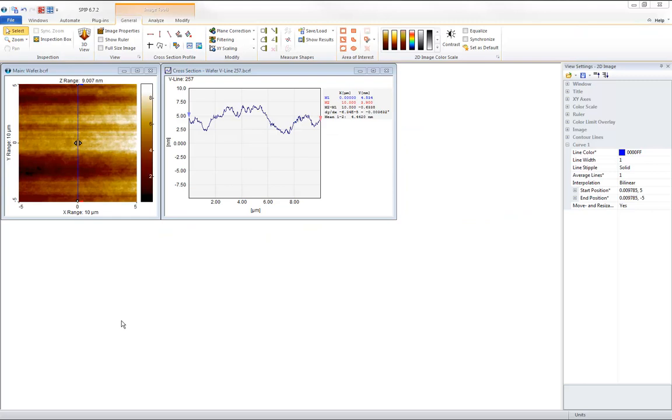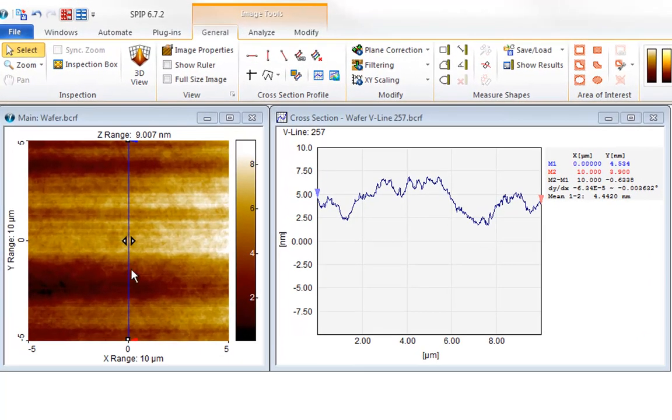To correct for vertical drift or jumps, we use linewise plane correction. In linewise plane correction, each scanline is corrected individually. Linewise correction is also known as flattening. This is an AFM image of a polished silicon wafer.